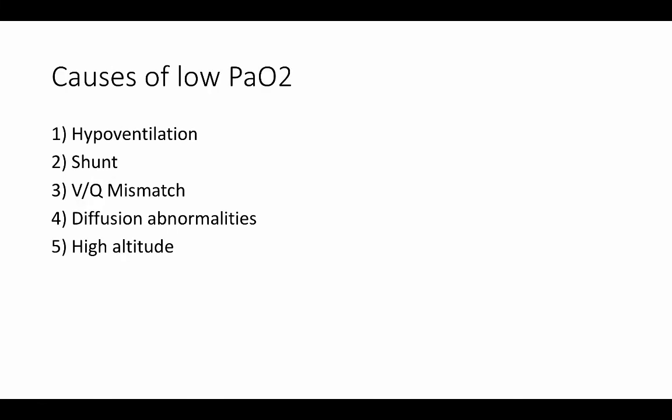So that is my quick summary of causes of hypoxemia. We covered hypoventilation, shunt, VQ mismatch, and touched briefly on diffusion abnormalities and high altitude. One final thought is that no patient is perfect. And so very often we might find that there is a combination of two or more of these causes of hypoxemia in a patient. Don't let that fool you. Thanks.